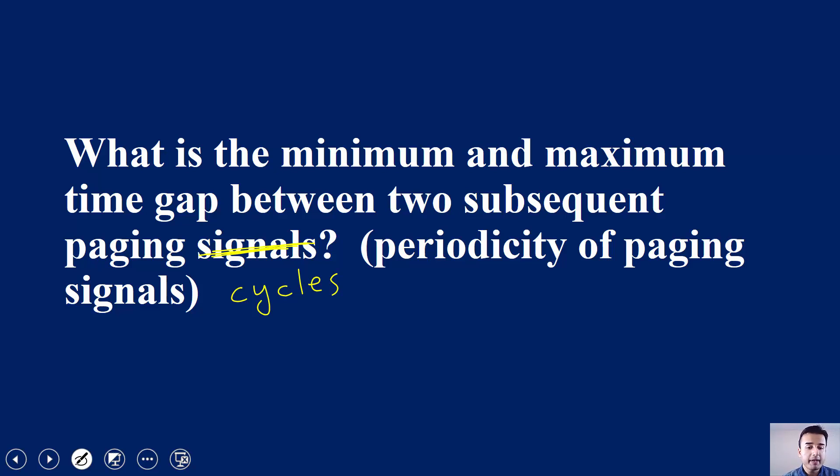In case of LTE, paging is defined in terms of radio frames: 32 radio frames, 64 radio frames, 128 radio frames, and then 256 radio frames. These are the different paging cycles which you can configure in the network, and the unit for this is RF, meaning radio frames.